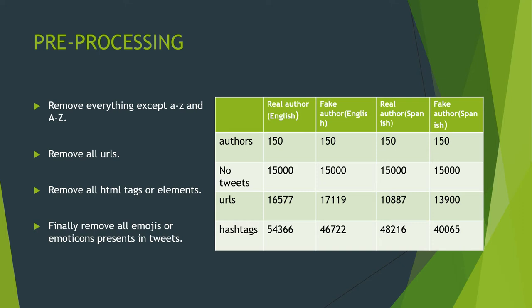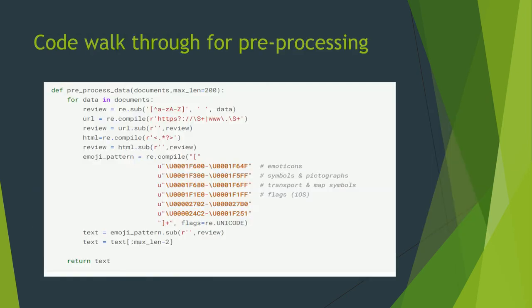The URLs present in the real authors' English dataset are 16,577; for fake authors' English dataset, 17,119; real author Spanish dataset, 10,887; and fake author Spanish dataset, 13,900. Hashtags are 54,366 for real author English; 46,722 for fake author English; 48,216 for real author Spanish; and 40,640 for fake author Spanish.